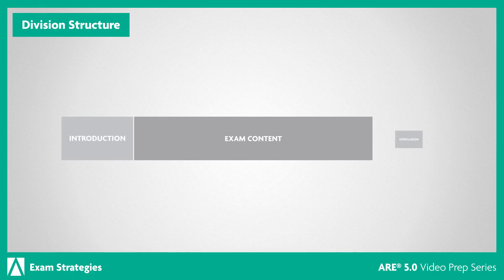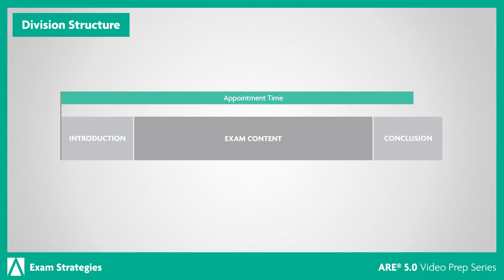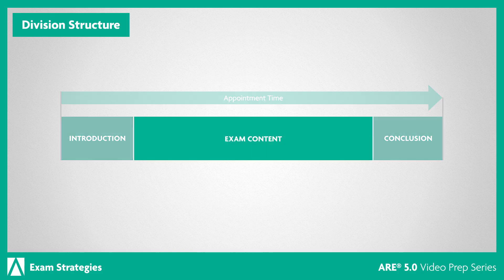All six ARE 5.0 divisions are organized the same way, varying only in the number of items and the testing time. Each appointment will begin with a few introduction screens and end with a few final reminders and an exit survey. In the next few minutes, we'll focus on how to approach the exam content you'll encounter within each division.